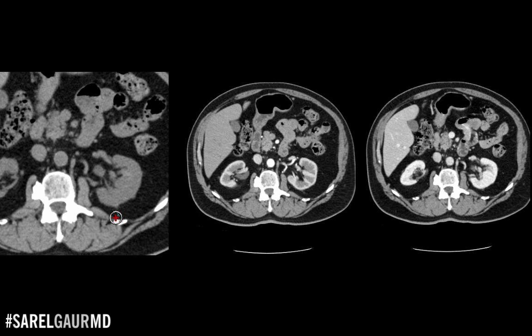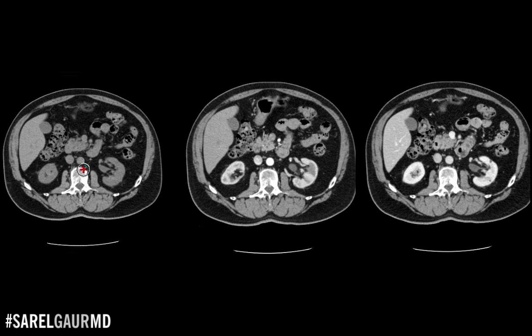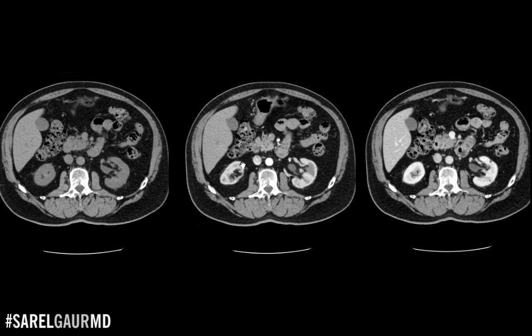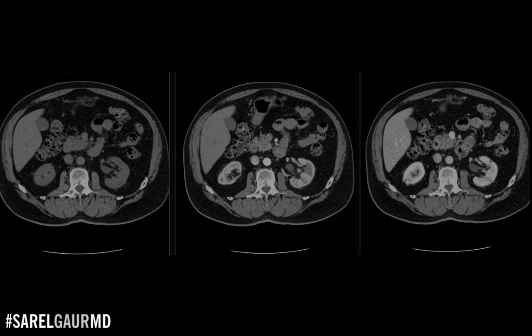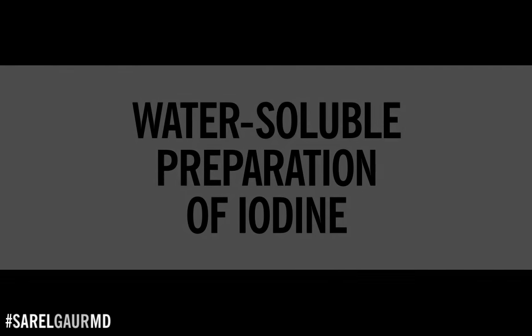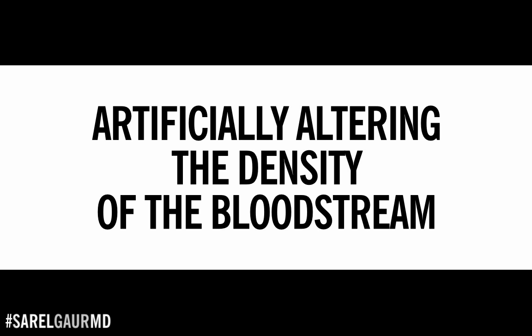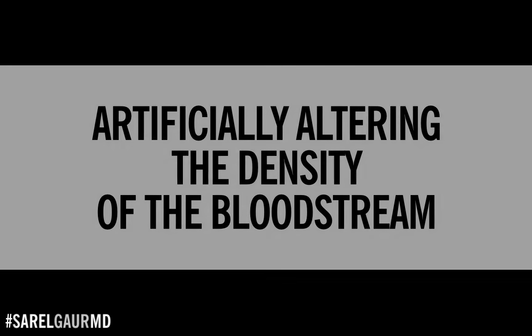So how can I extract even more information from this CT density map? The answer is by using intravenous contrast to alter the density of structures within the body. Intravenous contrast is nothing but a water-soluble preparation of iodine — iodine is a dense material. By injecting this into the bloodstream, I'm artificially increasing the density of the blood pool, and then over time, as the body processes the contrast, I'm artificially altering the density of solid organs.